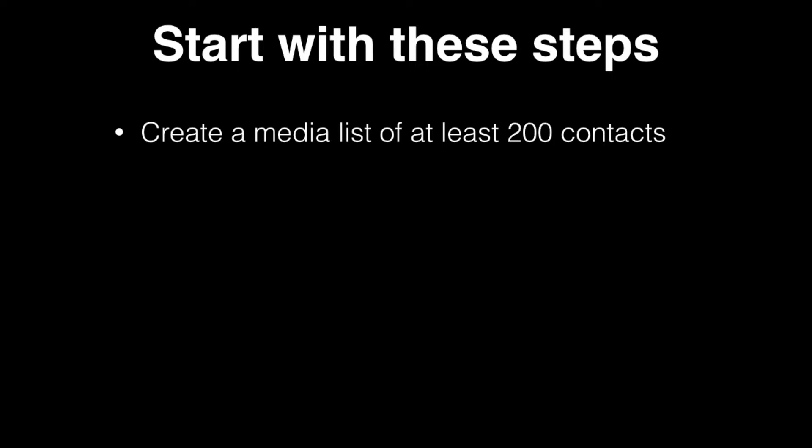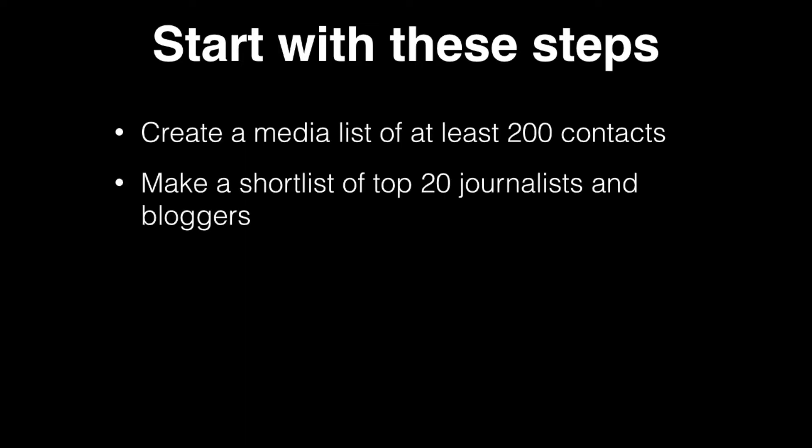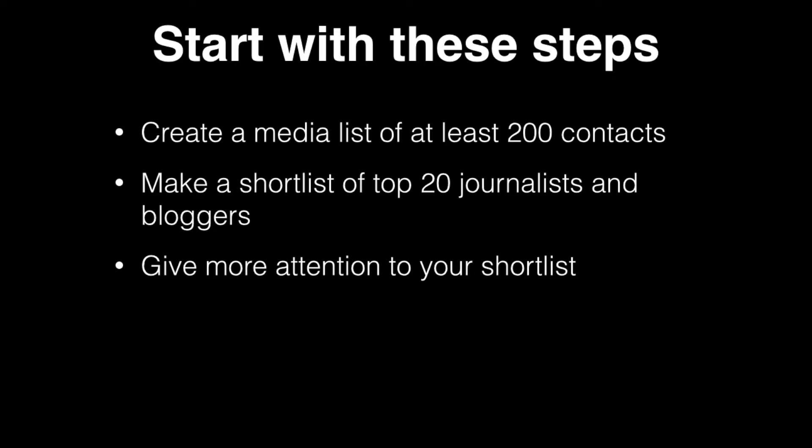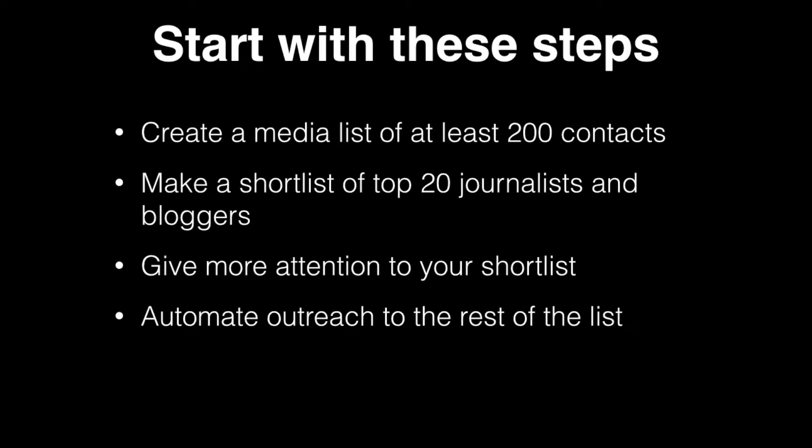You should start with the following steps. First, create a media list of at least 200 contacts that are relevant to your niche. Of course, 200 is an example I recommend, but it can also be 100 if your niche is very narrow, or 500 if there are lots of media outlets that cover your topic. Next, make a short list of top 20 journalists and bloggers who have significant reach of your target audience and are relevant to your niche. This will be your top priority — go the extra mile to build relationships with them by following them on social media, commenting on their articles, subscribing to their newsletter, or sending them an email with a compliment about their recent article. In the next lecture, I'll give you even more ideas on how to show your attention. And finally, automate the outreach to the rest of the list.